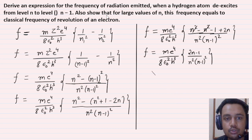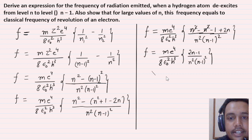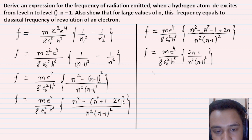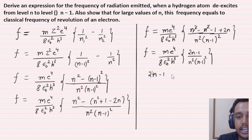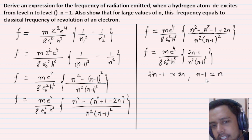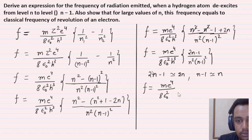Now the question says: also show that for large values of N. If N becomes very large, then 2N − 1 is almost equal to 2N, because 1 becomes very small compared to 2N. Similarly, (N−1) ≈ N. So now put these approximations.